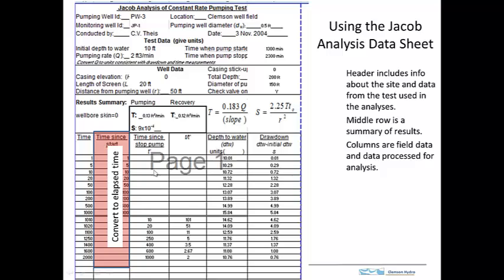And the next column is the time that's elapsed since the pump was turned off. And I call this T prime. So when we did the analysis of the Jacob analysis, this was called T minus T1.